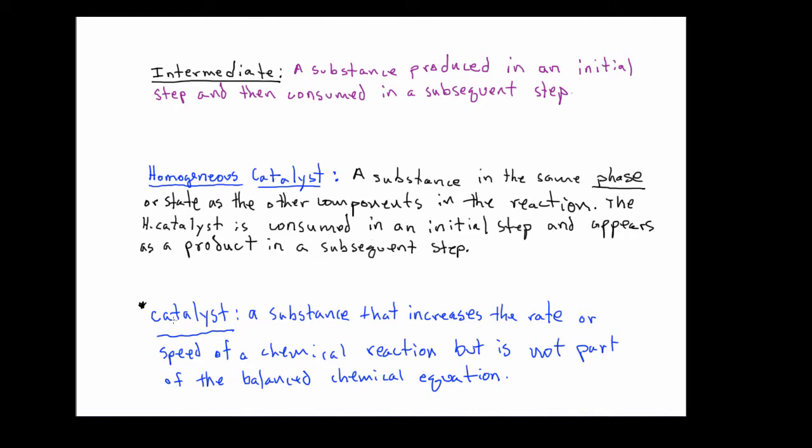Catalysts come in two forms. They can either be heterogeneous or they can be homogeneous. A heterogeneous catalyst is the type of catalyst where you might put platinum metal or something like that into the chemical reaction, and the platinum metal interacts with the reactants in such a way to increase the rate of the reaction.